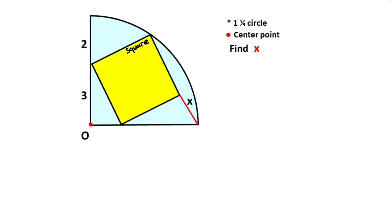X is asked. First of all, you know that here is 90 degrees because of the quarter circle, and these are also 90 degrees because of the square. Let's call this angle alpha and this angle theta. You know that alpha plus theta equals 90 degrees, therefore this angle must equal theta and this angle must equal alpha.